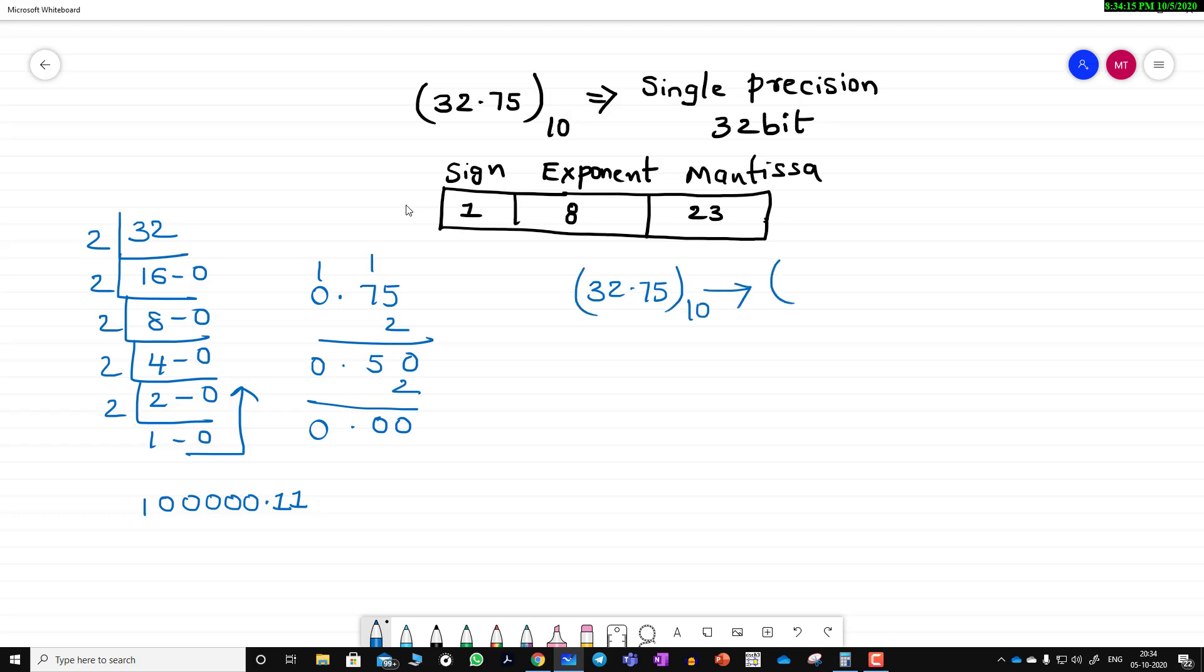Therefore, 32.75 in decimal converts to binary as 100000.11. Now to represent it in single precision format, the formula is 1.m times 2 to the power e minus 127. This is the formula for 32-bit single precision format.